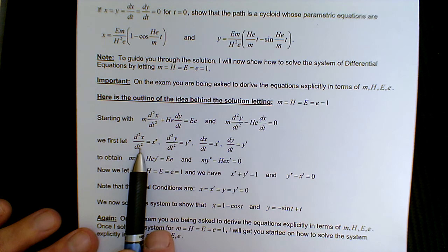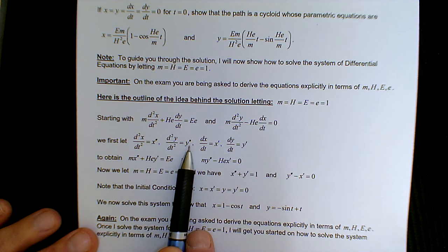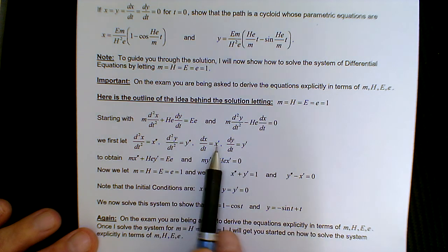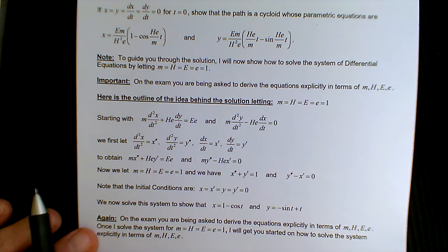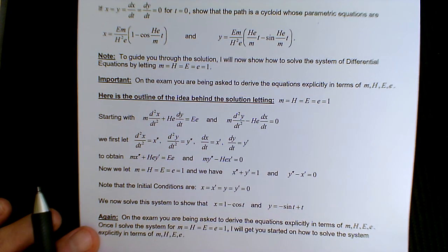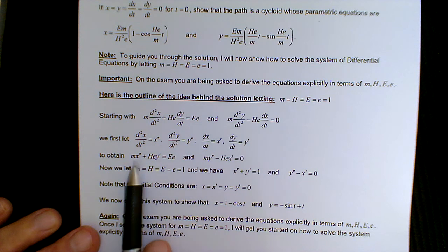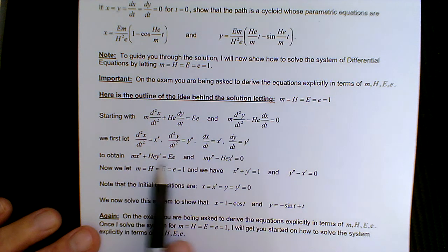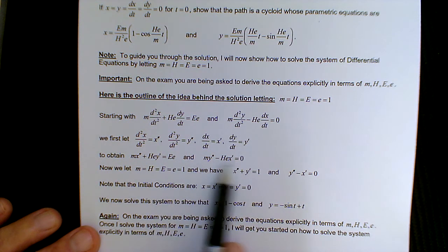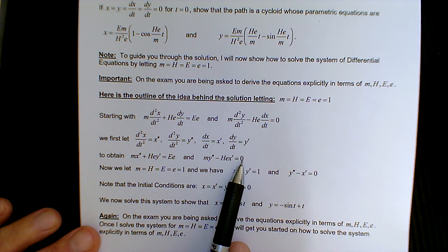So for the second derivative of x, we'll use x double prime, y double prime for the second derivative of y, x prime and y prime for the derivatives, first derivatives of x and y respectively. And so we just substitute those, and we have two equations that now at least look a little simpler to work with.